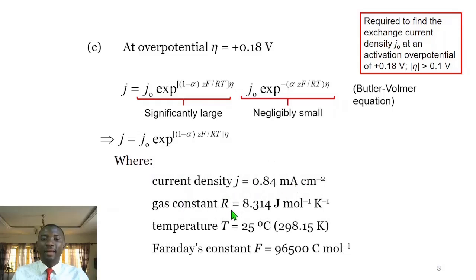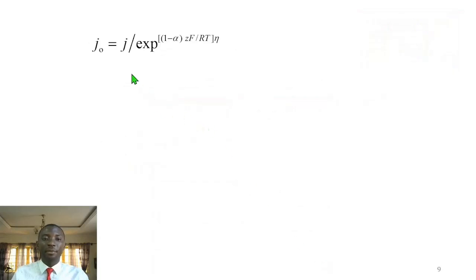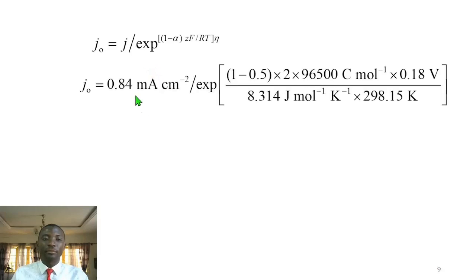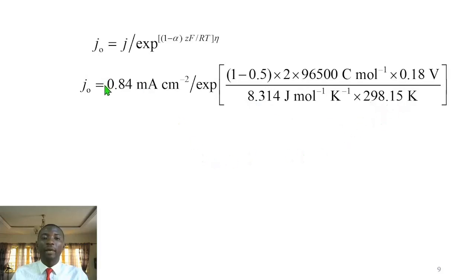Making J0 the subject of the Tafel formula and substituting: J is 0.84 mA per centimeter squared; R is 8.314 J per mol per Kelvin; T is 298.15 Kelvin; F is 96,500 C per mol; the transfer coefficient alpha is 0.5; Z is 2 electrons; and the overpotential is 0.18 volts. Evaluating this expression gives the exchange current density J0 as 0.76 µA per cm².